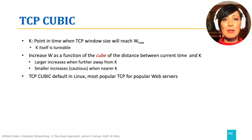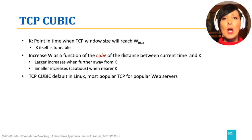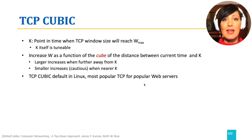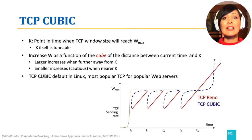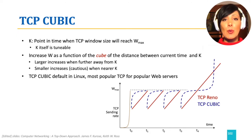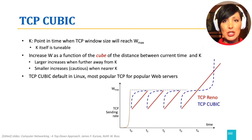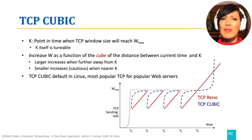TCP Cubic increases congestion window size as a function of the cube of the distance between T, the current time, and K, which is a point in time when the TCP window size will reach the maximum value. This results in larger increases in lower values of the window when T is still further away from the point where the maximum value would be reached, and smaller increases when it is about that time.